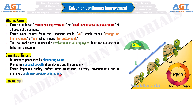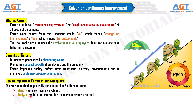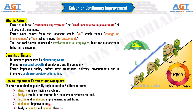How to implement Kaizen at our workplace: The Kaizen method is generally implemented in five steps. First, identify an area having a problem. Second, analyze the data and method for the current process. Third, test and evaluate improvement possibilities. Fourth, implement improvements. Fifth, analyze results and present them to top management for feedback.